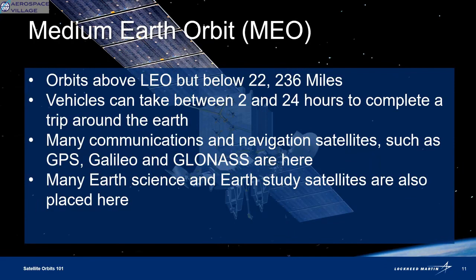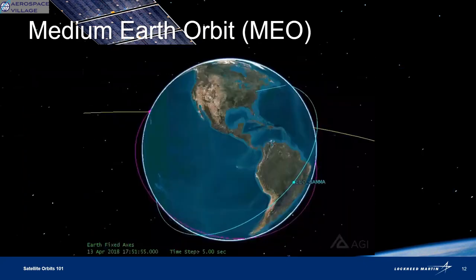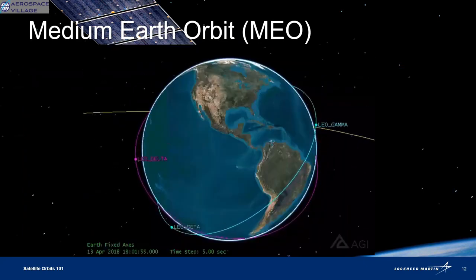MEO, or medium Earth orbit, happens above that 1,240-mile LEO threshold but below 22,236 miles. These orbits can take between 2 and 24 hours to get around the Earth. The coverage or amount of surface the satellite can see at this distance gives us things like GPS and other navigation satellite constellations — and constellations just means there's way more than one satellite doing that job.